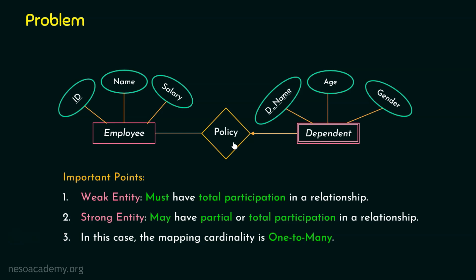We can easily understand that employee is a strong entity set and dependent is a weak entity set. The strong entity set will always have a primary key attribute, whereas a weak entity set will not have a primary key attribute and will be dependent on another entity set. Employee has ID as its primary key, while dependent does not have a primary key attribute, so it must rely on the strong entity set.